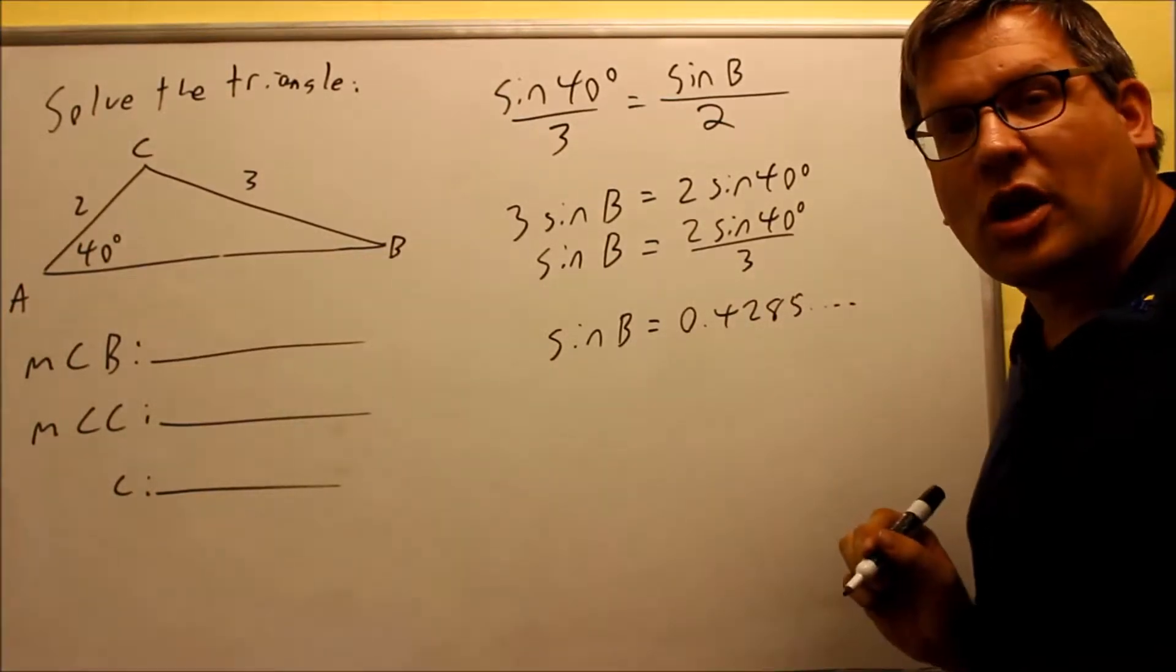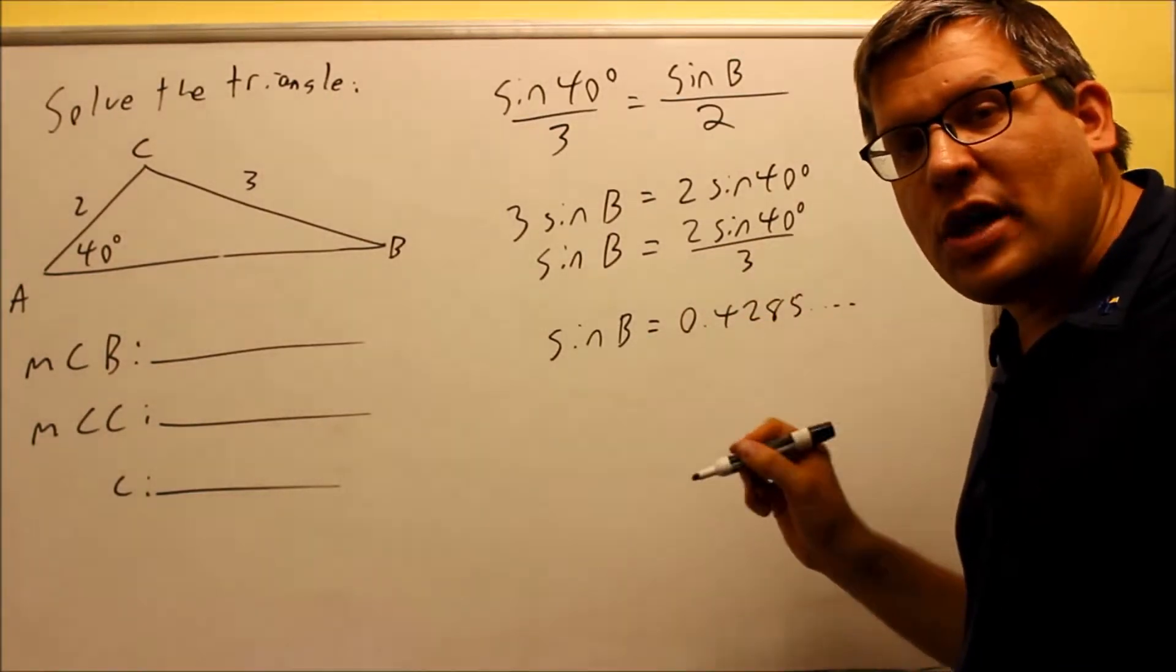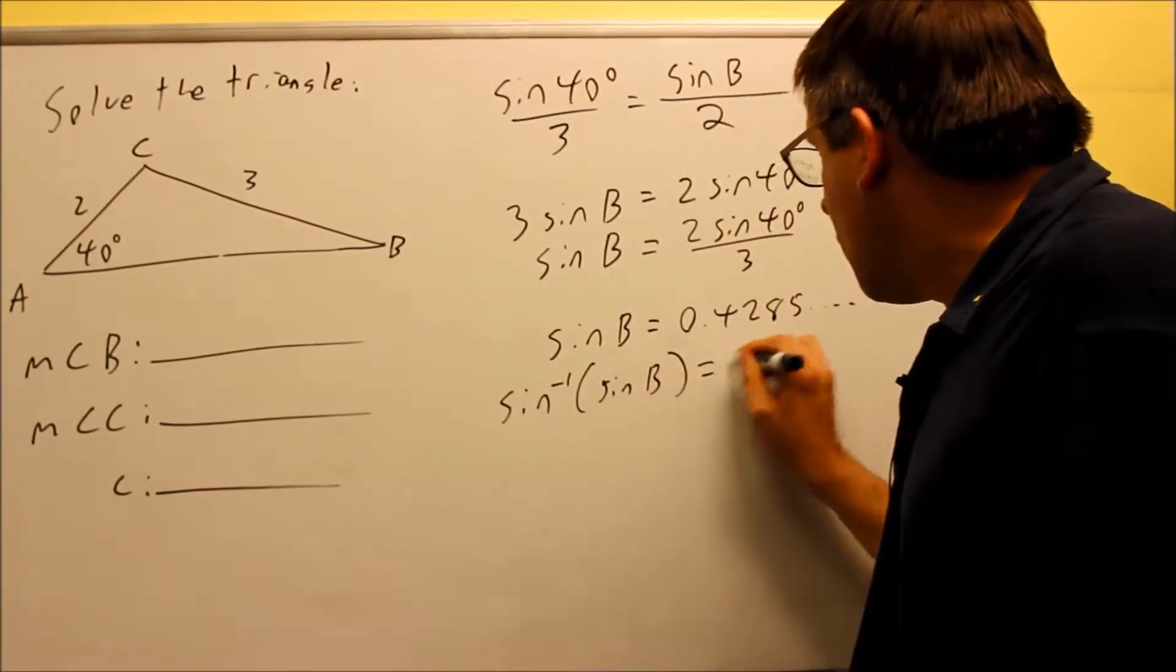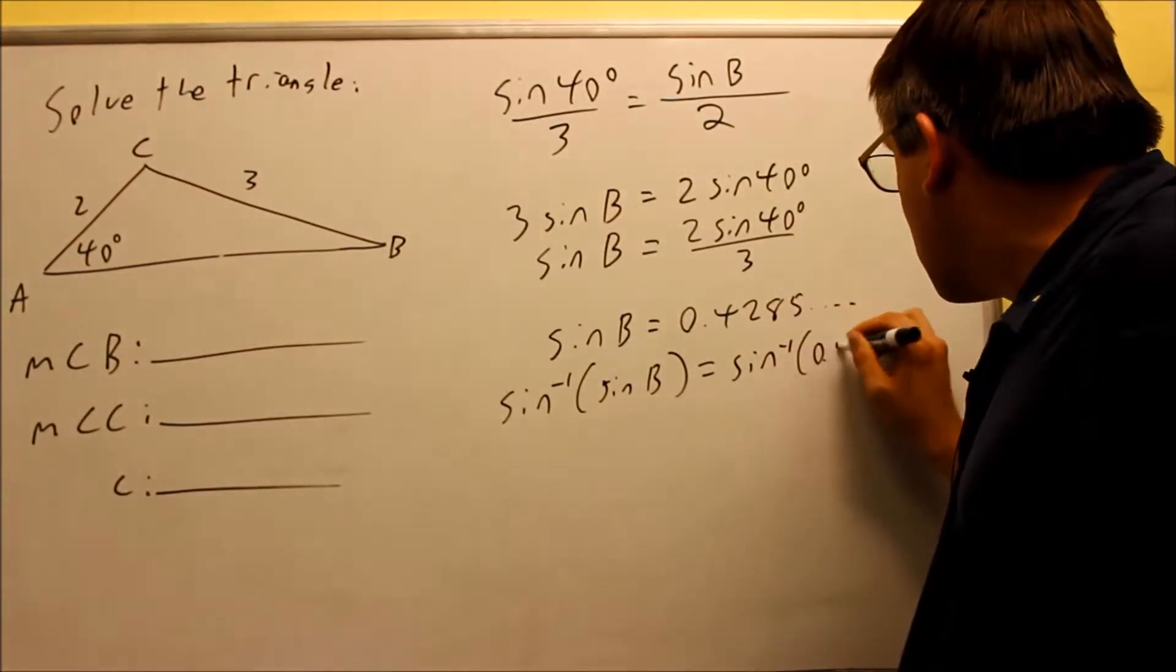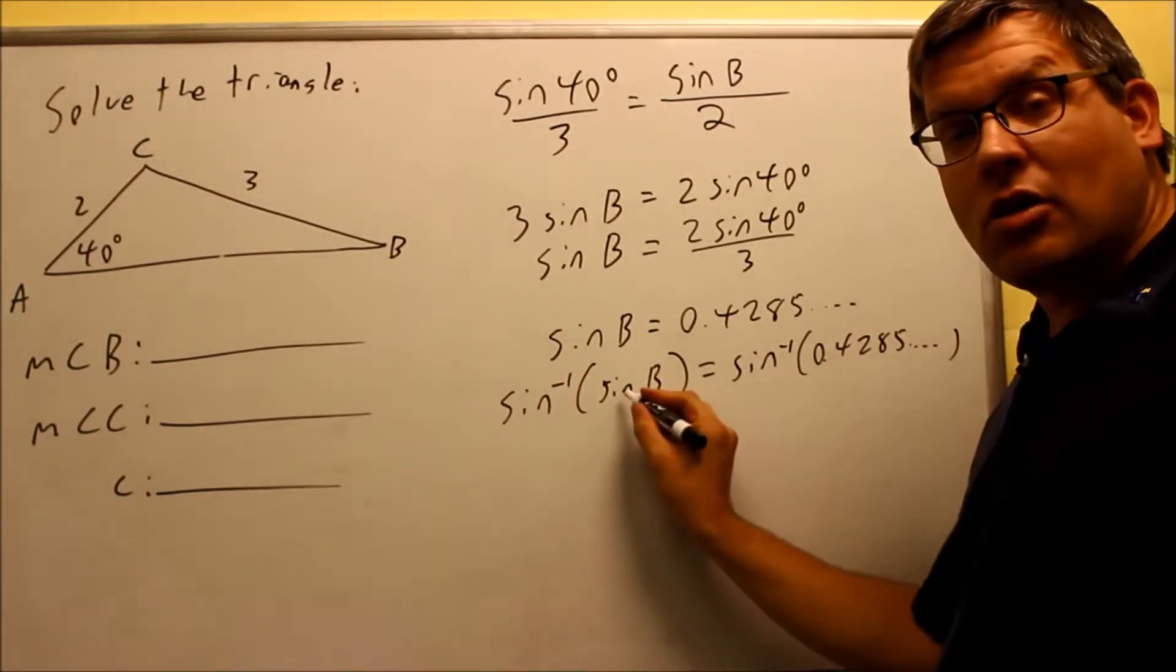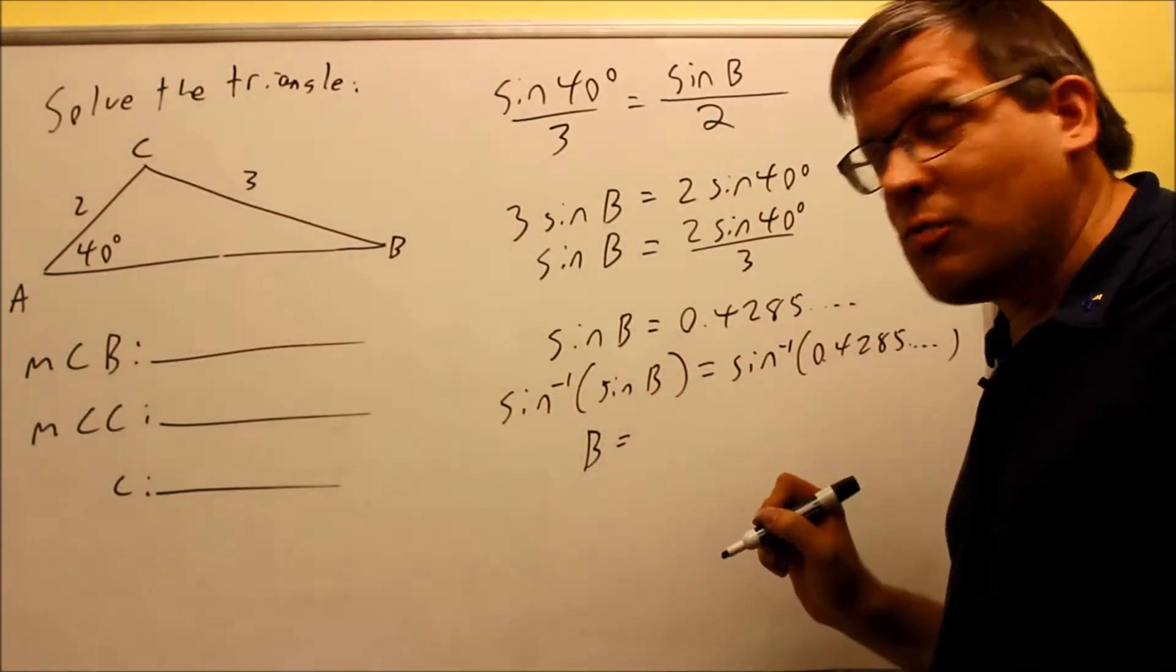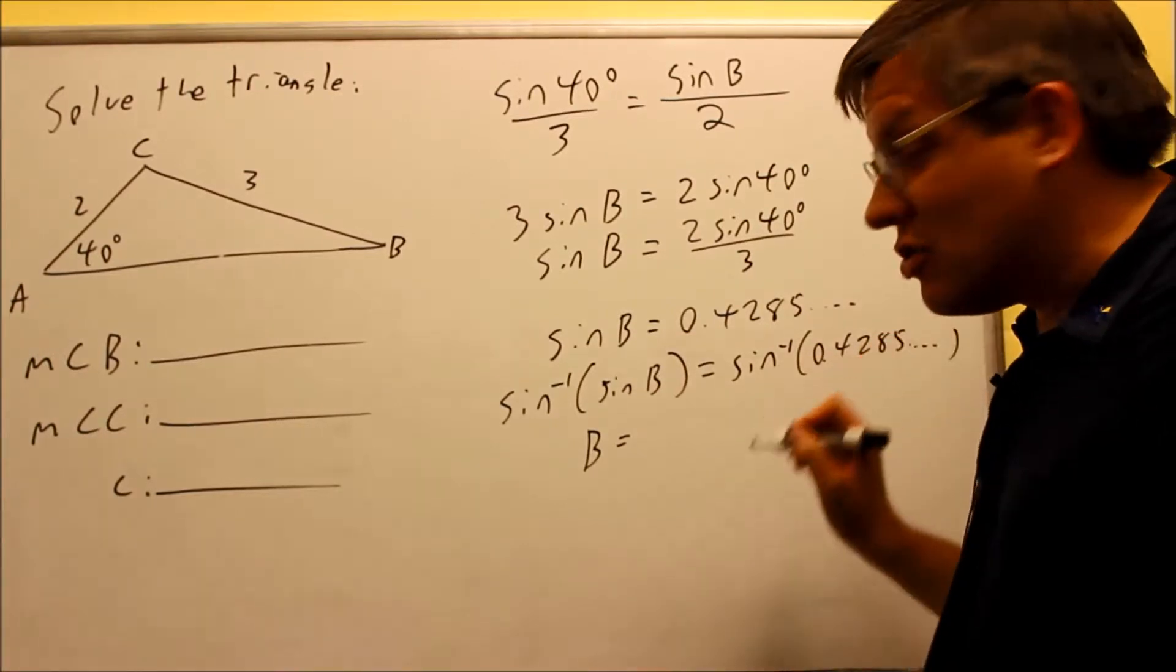There will be some more decimals that come after that. In order to solve for this, since we're now solving for B, the proper technique is you want to take the inverse of both sides. By doing the inverse, that allows you to cancel out the sine here in front and get B by itself. So we've got to do an inverse on both sides to make the equation balanced. Inverse sine of .4285 continuing,